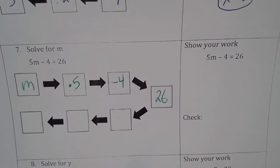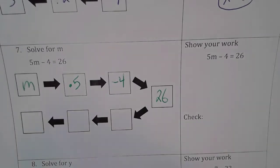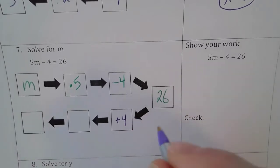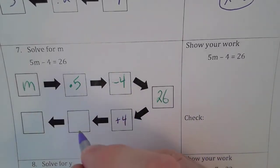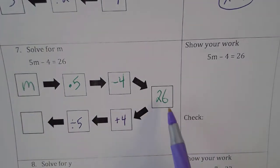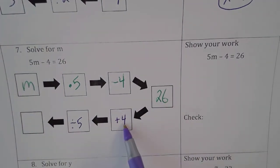So if you work backwards using the flowchart, you are going to do the opposite of subtracting by 4, which is to add 4. Do the opposite of multiplying by 5, which is dividing by 5. And before we write in our solution, we can do that: 26 plus 4 is 30 and 30 divided by 5 is 6.